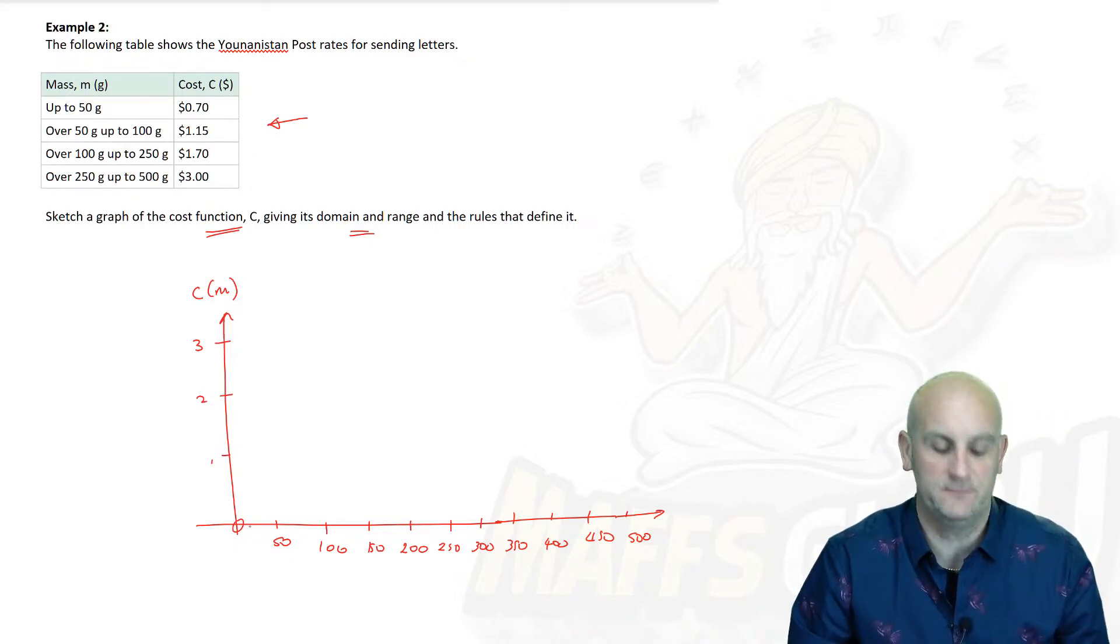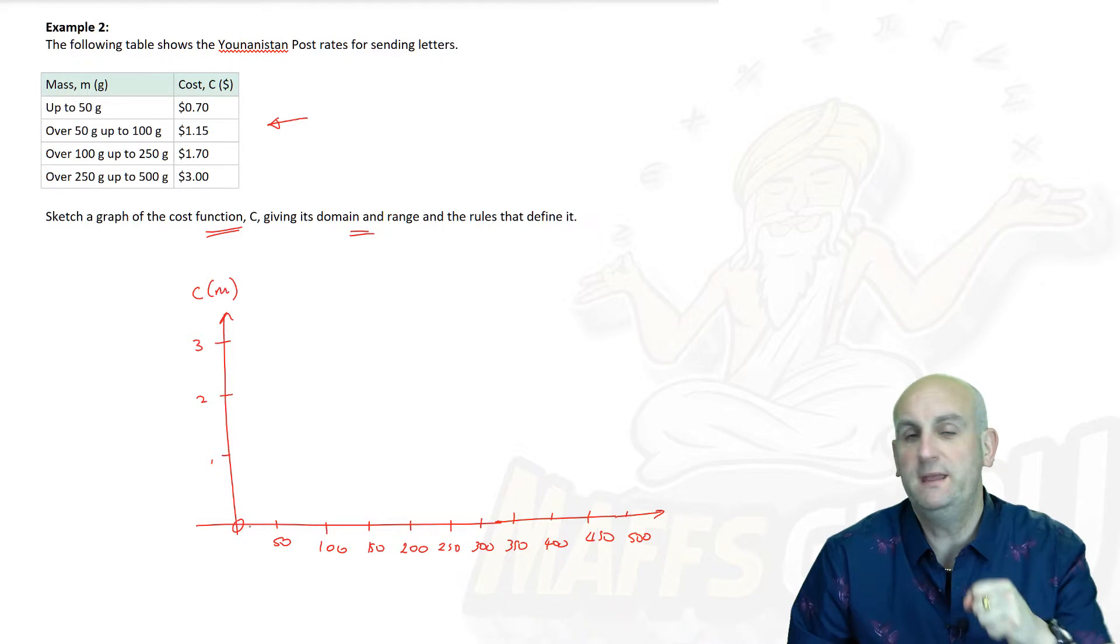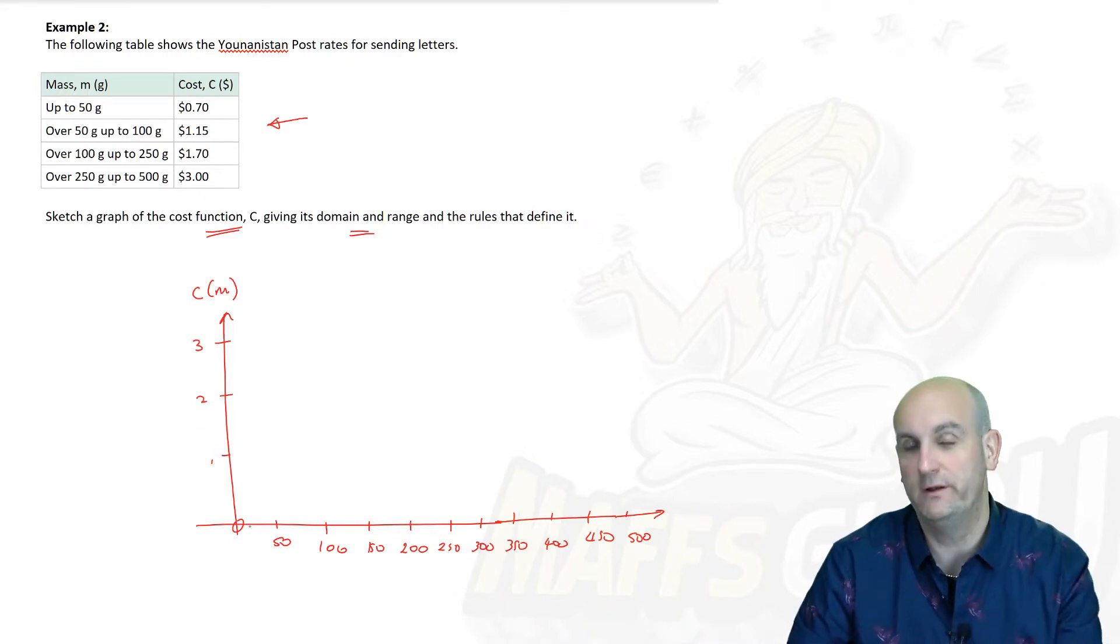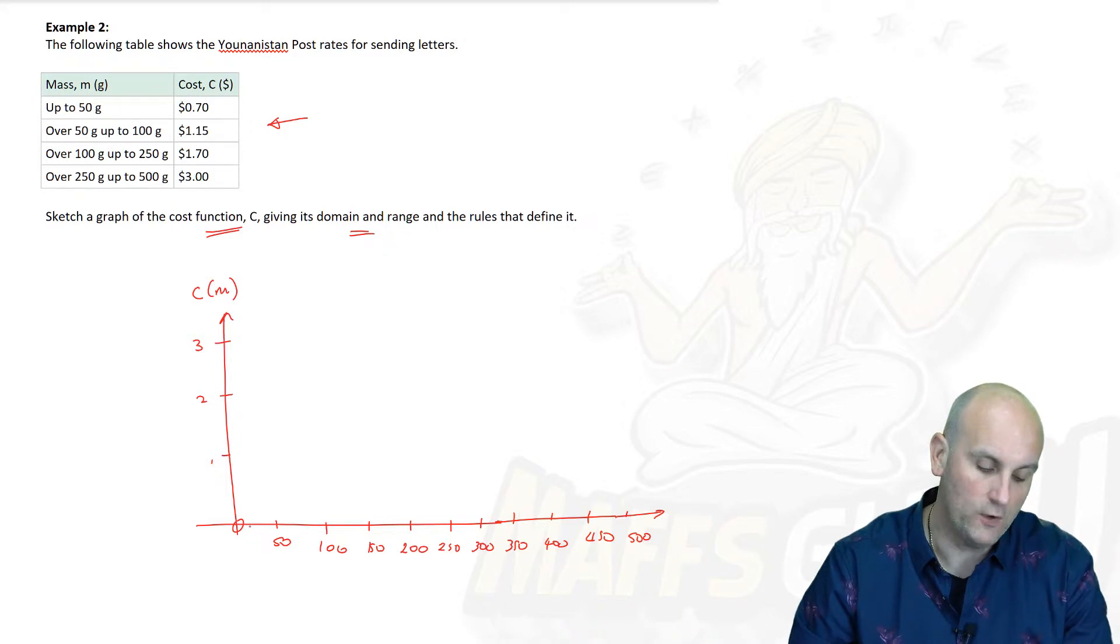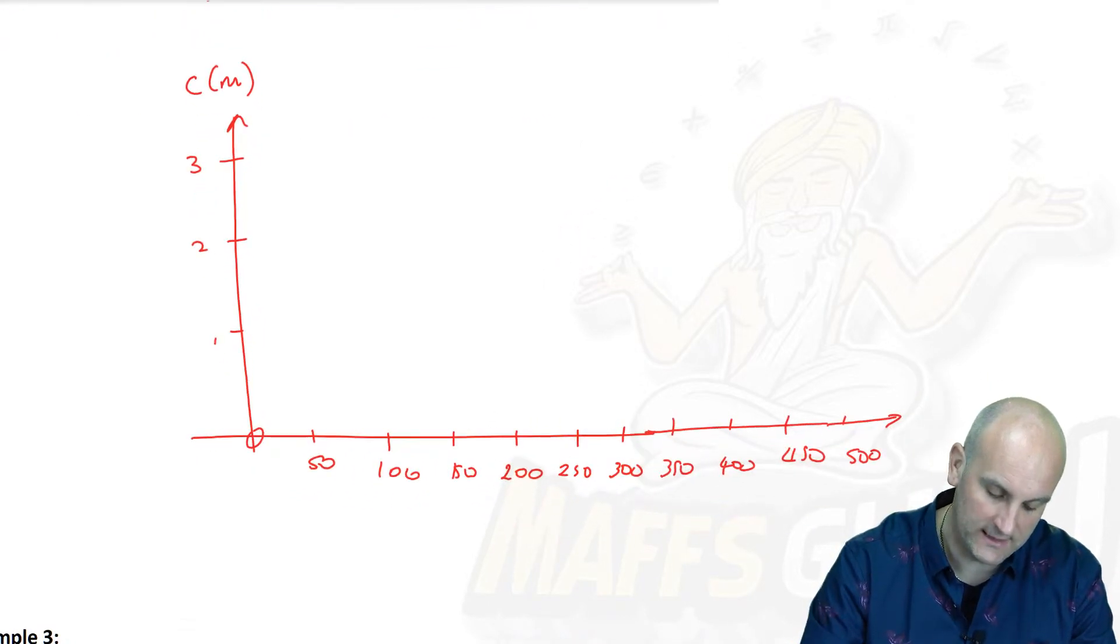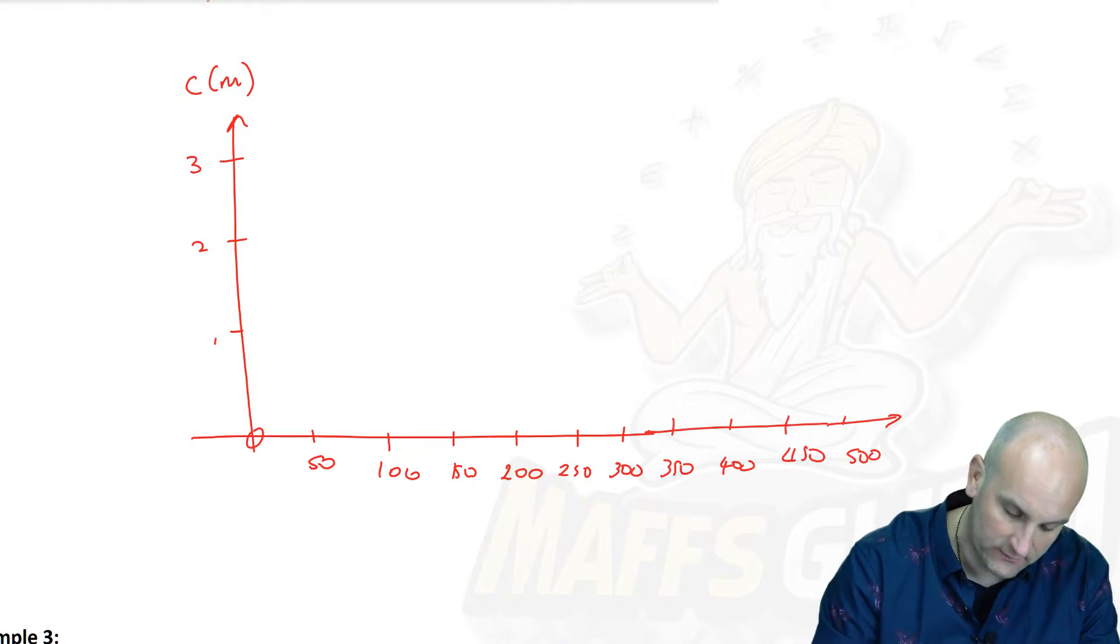Up to 50 grams. Now the big question we're going to face here is, is this a linear, is it hybrid, or is it quadratic? Well, hopefully all of you are going to say, oh, it's a hybrid function, because we've got different costs for different masses. But the costs seem to stay the same. Good answer if you come up with hybrid.